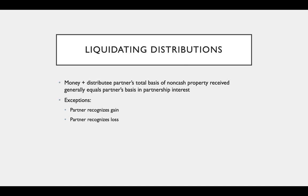Money plus the distributed partner's total basis of non-cash property received is generally going to equal the partner's basis in their partnership interest. This makes sense because we're basically changing forms of ownership — my basis in the partnership is almost always going to equal the basis of the assets I receive in liquidation in total. The two exceptions are when a partner either recognizes gain or loss, because if we recognize gain we get to increase the basis, and if we recognize loss we decrease the basis.